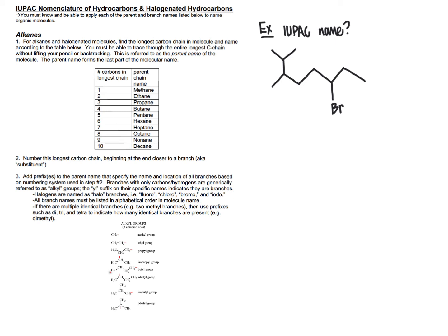Mapping out the longest pathway through this molecule — starting from the upper left, going down through eight carbons without backtracking — confirms this is a legitimate longest carbon chain. For step two, we number from the end closer to a branch. Starting from the upper left puts a branch at position two; starting from the other end would put the bromine branch at position three. So we number from the left: one through eight.